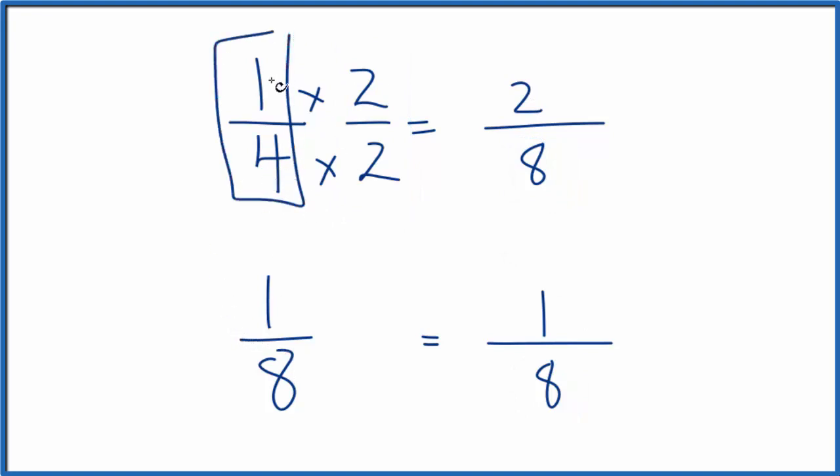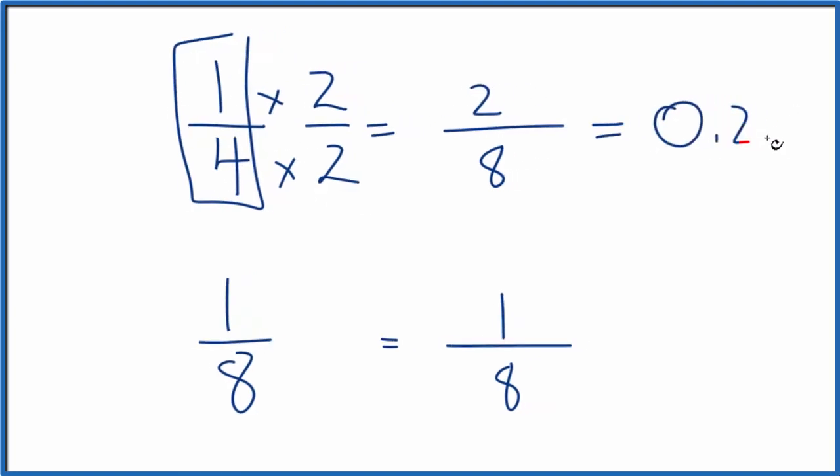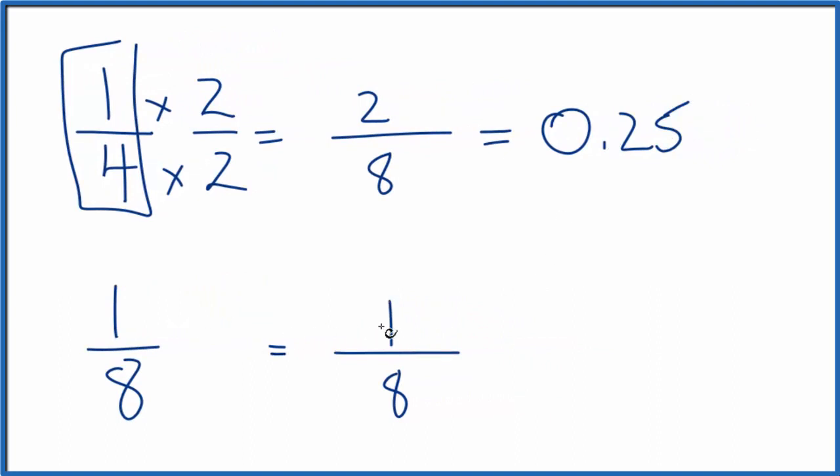The other way is I could divide 1 by 4 or 2 by 8, and I end up with 0.25. Here, if I divide 1 by 8, I end up with 0.125.